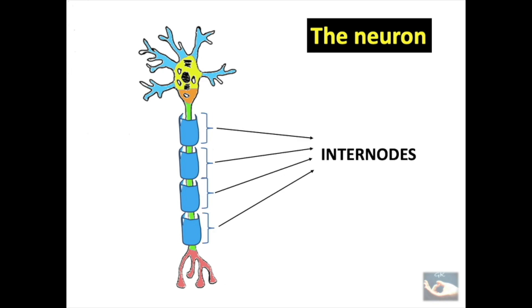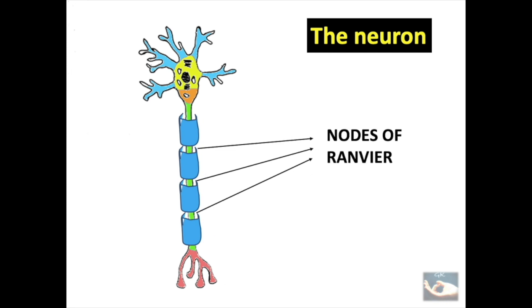The segments of myelin sheaths are called as the internodes and the gaps between them are called as the nodes of Ranvier.